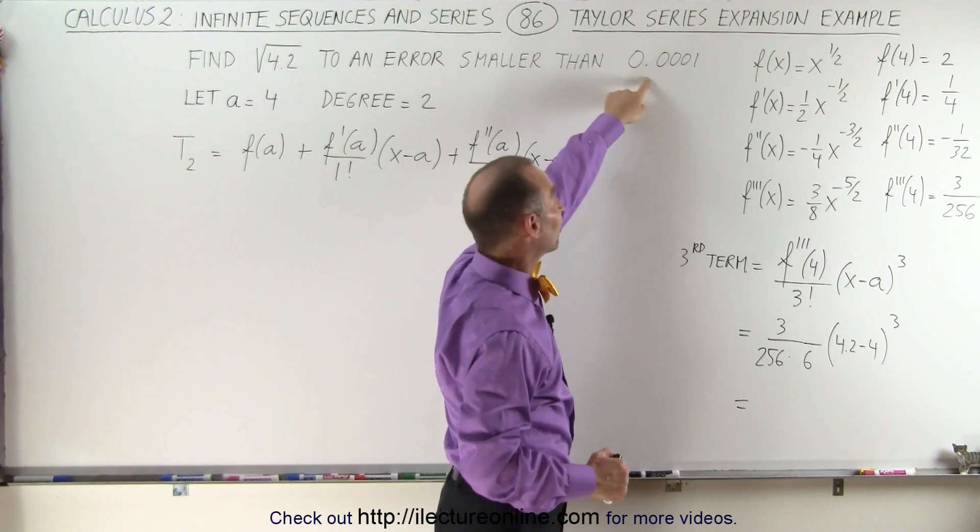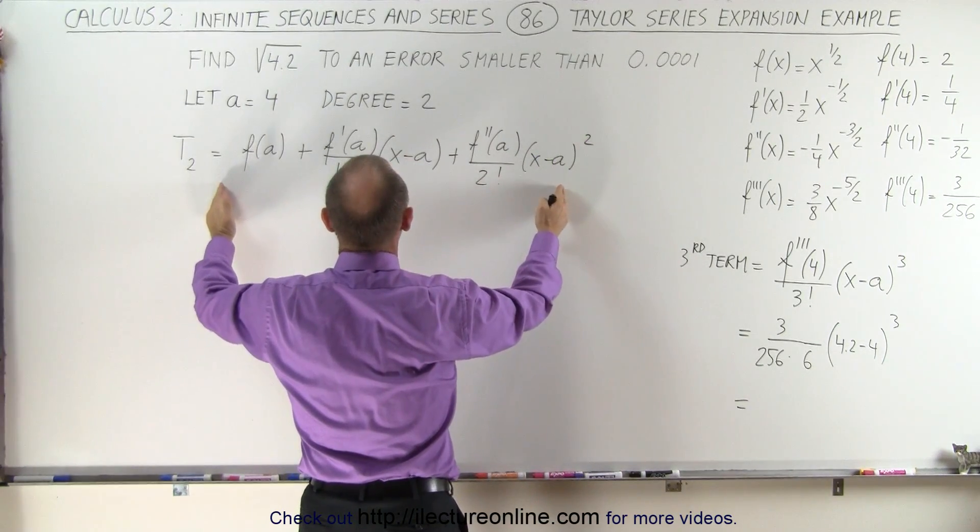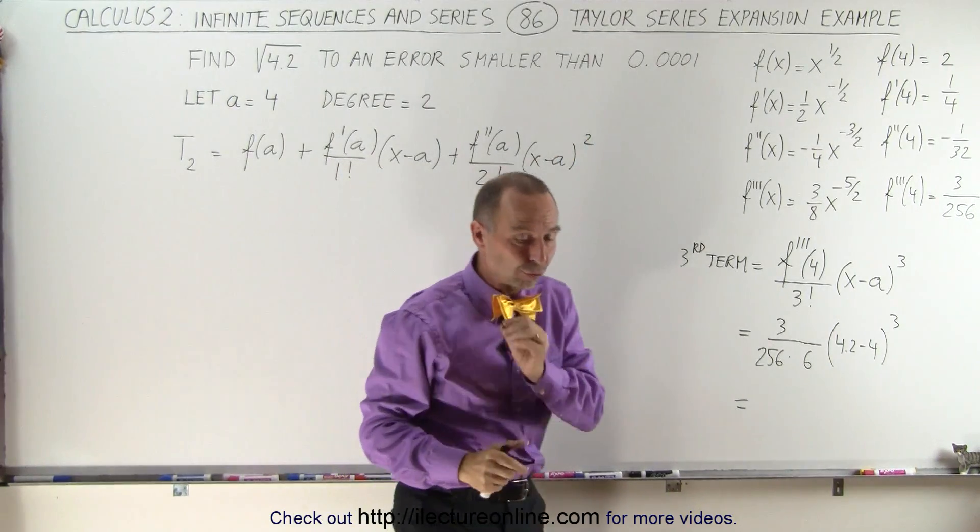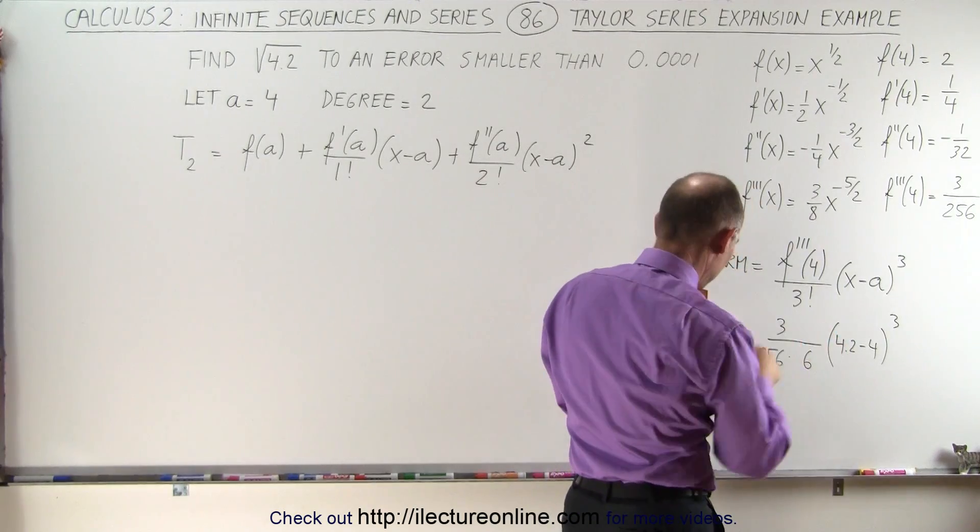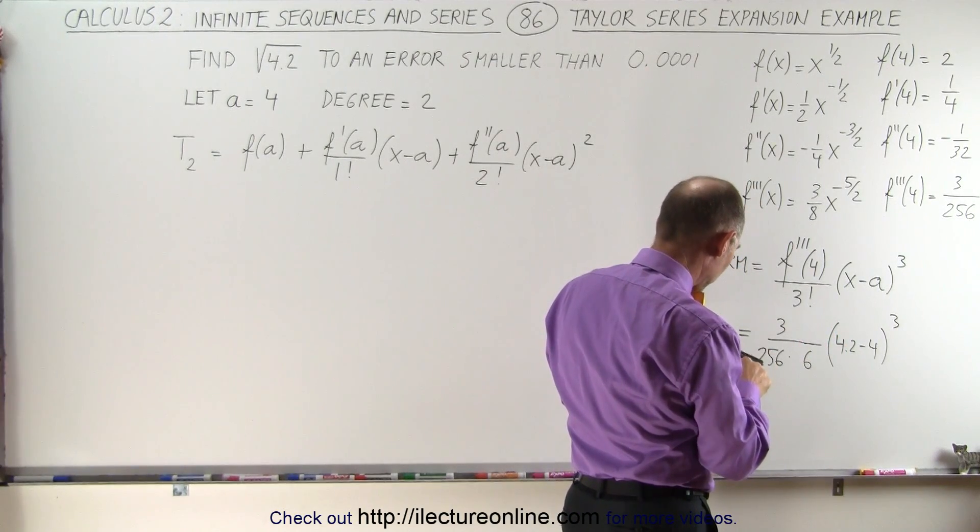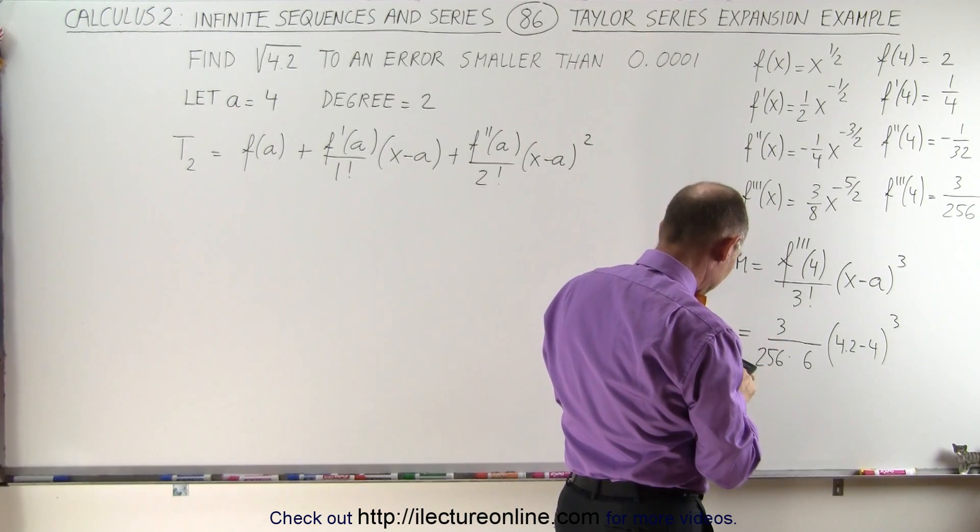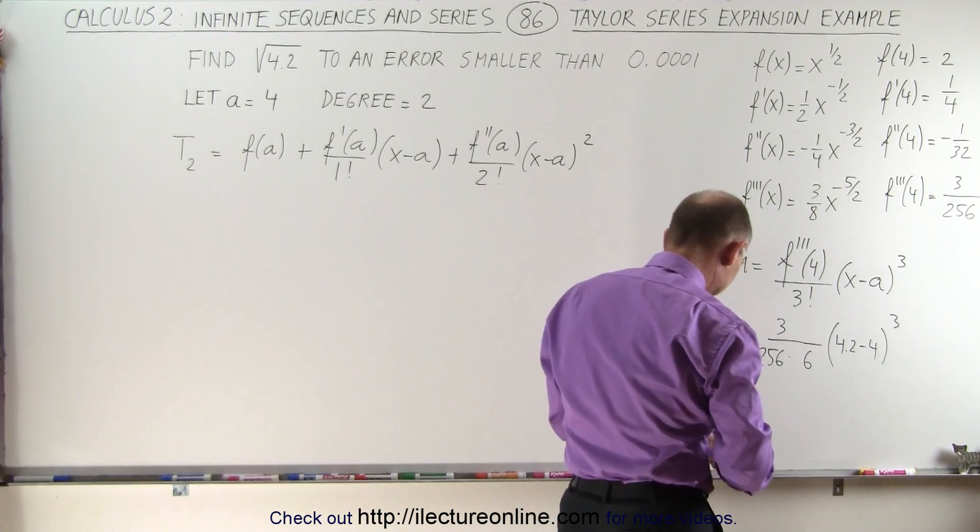And if it's less than this, then we're good. That means this expansion to three terms will give us a value with an error smaller than that relative to the true value. So here we have 0.2 raised to the third power times 3 divided by 256 and divided by 6 equals, and take a look at that, that is equal to 0.0000156.